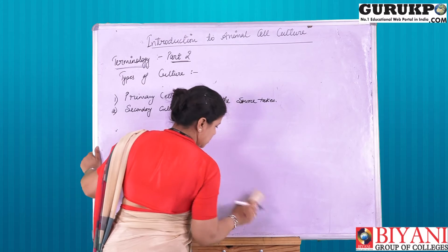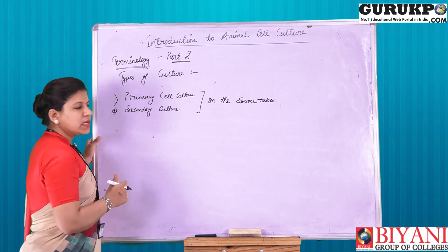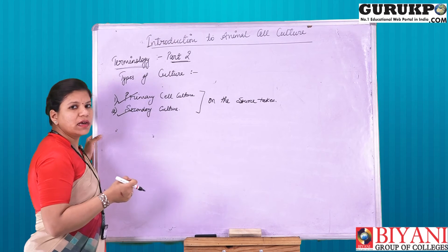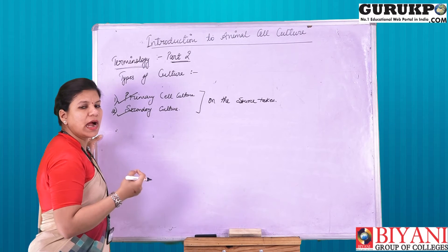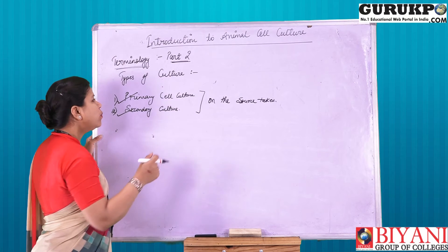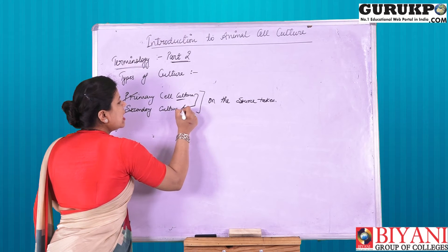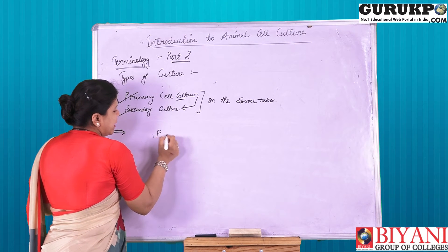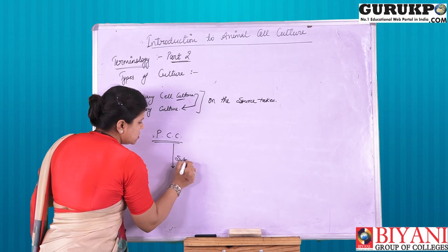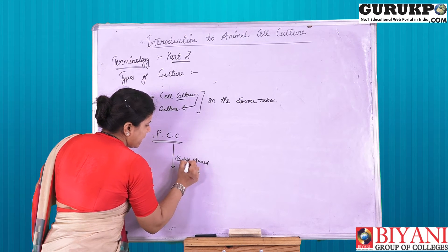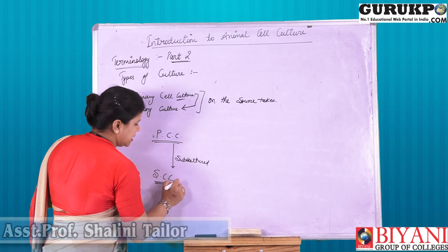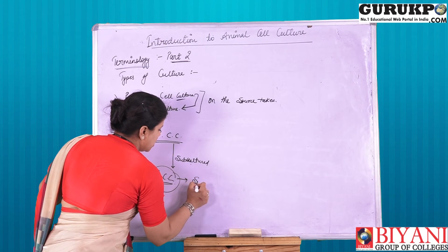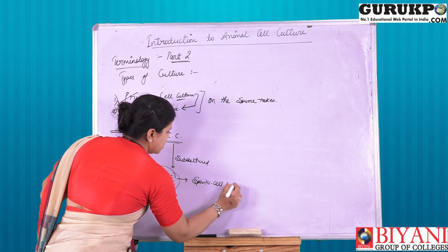In the previous lecture we discussed primary and secondary cell culture. Primary cell culture is obtained when we take the explant directly from the source by providing artificial conditions and media for its growth. When primary cell cultures are subcultured, they give rise to secondary culture. This secondary cell culture gives rise to a specific cell line or cell lineage.